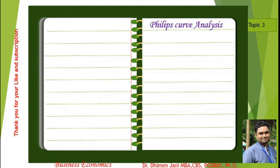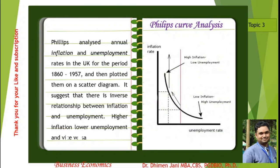Topic number three is the Phillips curve analysis. Phillips analyzed annual inflation and unemployment rates in the UK for the period 1862–1957 and plotted them in a scatter diagram. It suggests an inverse relationship between inflation and unemployment: higher inflation leads to lower unemployment, and vice versa. There is a negative correlation between the inflation rate and the unemployment rate.